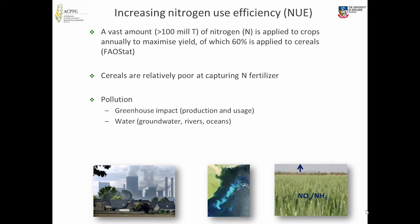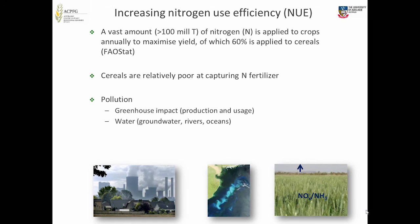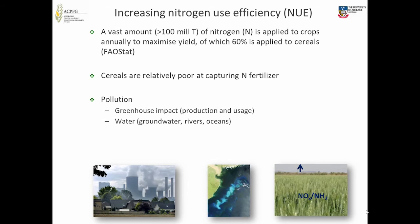In terms of greenhouse impact, about 2% of the world's energy is used to fix nitrogen from the atmosphere for nitrogen fertilisers. That's a huge impact. Nitrous oxide emissions from crops are another major greenhouse input, and there's a huge contamination of water.